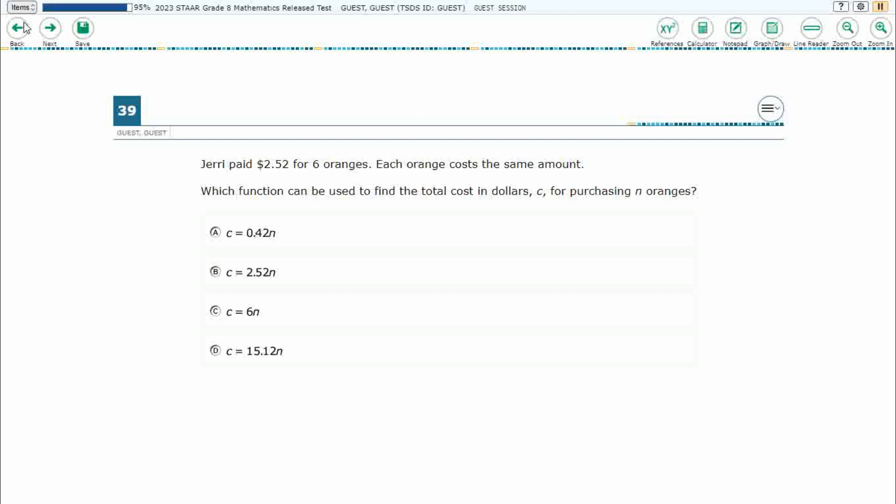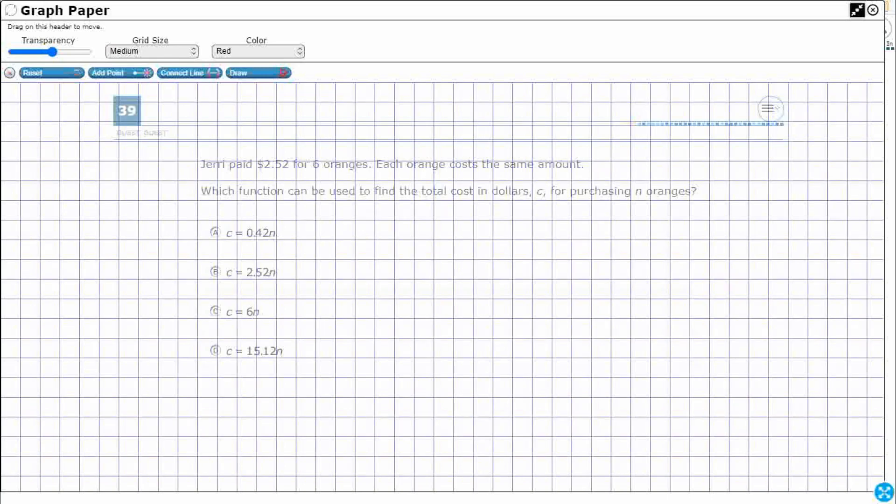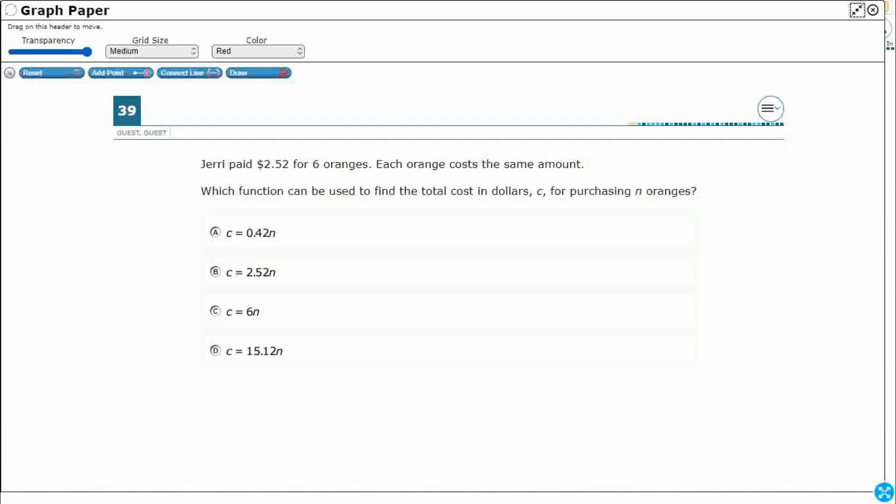So, Jerry paid $2.52 for 6 oranges, and each orange costs the same amount. Alright, so this is going to be very important for us. This lets us know that we've got equal groups, and we need to find a function to use the total cost in C dollars for the purchasing of N oranges.